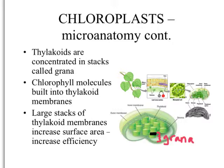Inside these thylakoids is where the chlorophyll molecule is located, and the chlorophyll molecule is super important to the photosynthetic process. The chlorophyll is inside the thylakoids, stacked up in grana. Being stacked like that increases the surface area and efficiency, allowing the plant to make a lot of glucose from the incoming light, carbon dioxide, and water.